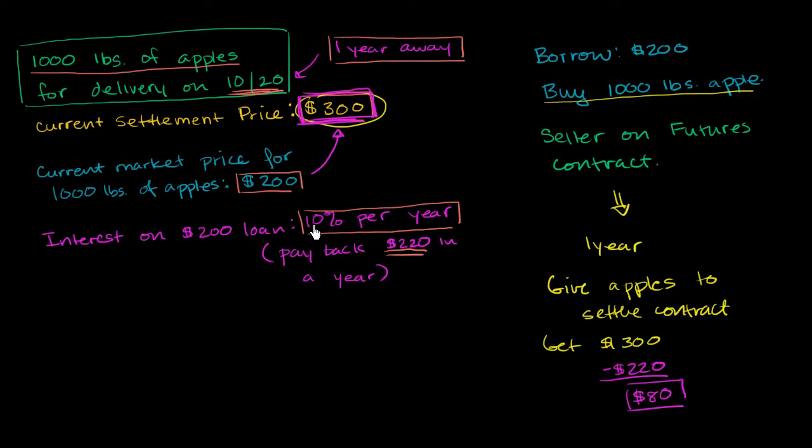So in this situation, the cost of borrowing is $20. So the settlement price really shouldn't be, if we assume that there's no arbitrage opportunities, it really shouldn't be more than $220.